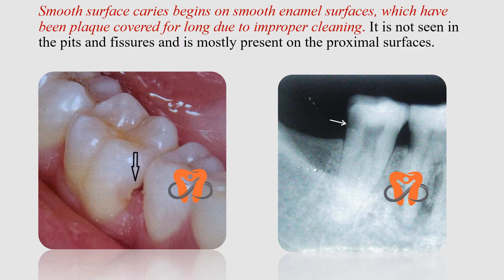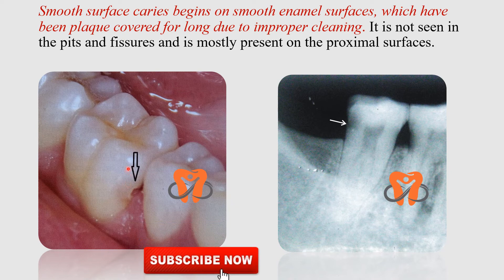Smooth surface caries begins on the smooth enamel surfaces that have been plaque-covered for long due to improper cleaning. It is not seen in the pits and fissures and is mostly present on the proximal surfaces. Radiographically, you can see a proper caries lesion on the proximal surface — these are the smooth surface caries.